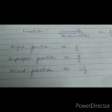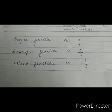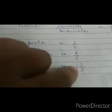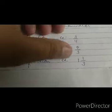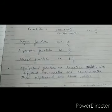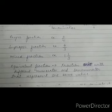The third type is mixed fraction. A mixed fraction is defined as a whole number combined with a fraction. For example, one and one upon three — here one is the whole number and one upon three is the fraction, written together as one-one upon three.